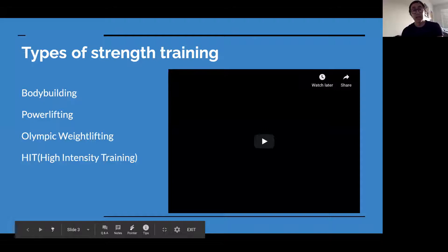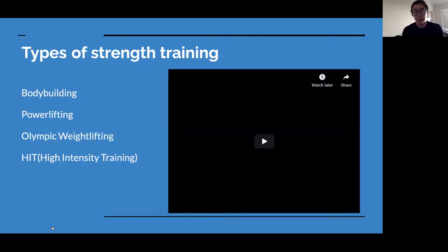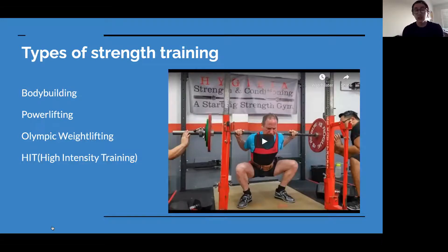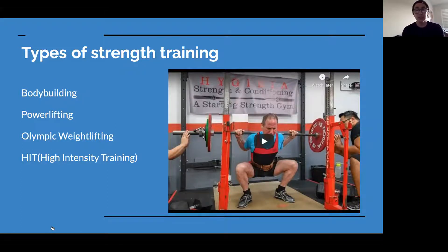There are four different types of strength training people normally participate in. The first is bodybuilding — think of Arnold Schwarzenegger. You train isolated muscle sections excessively to get nice size and definition. Then you have powerlifting, which involves three movement types called the big three: squat, deadlift, and bench press. These three movements are done with a large amount of weight, gradually increasing until you can't lift any more.